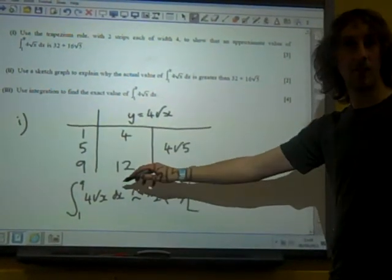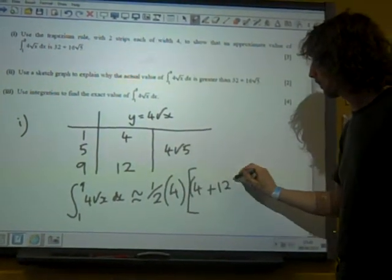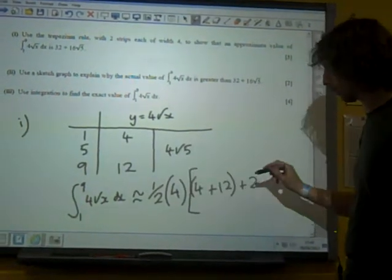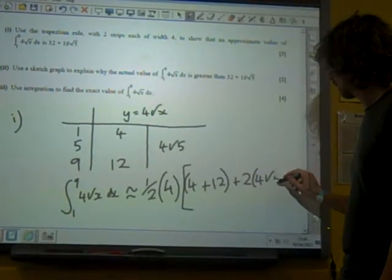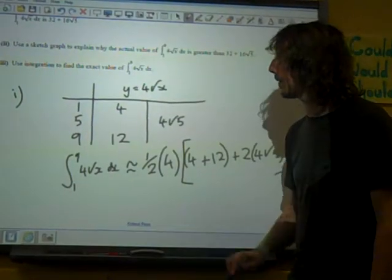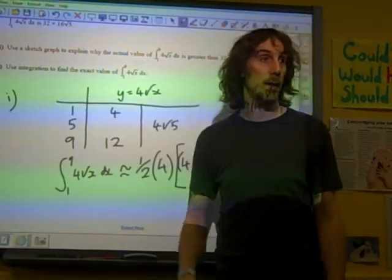Times the first plus the last, so the ones in that column, plus twice the sum of all the ones in that column. In this case, we're going to resist the temptation to go straight to the calculator because we know we've got the root five appearing in our final answer.